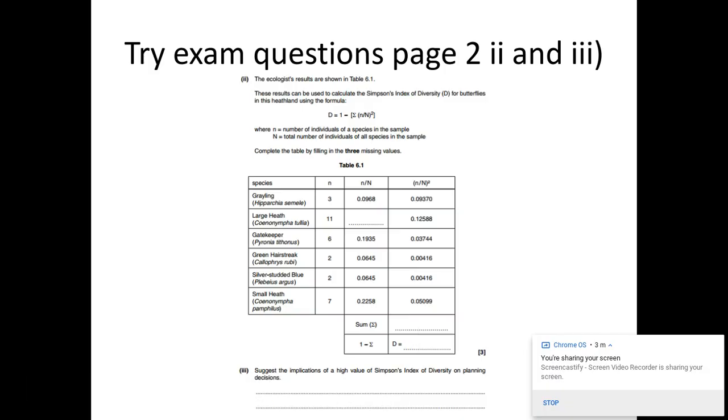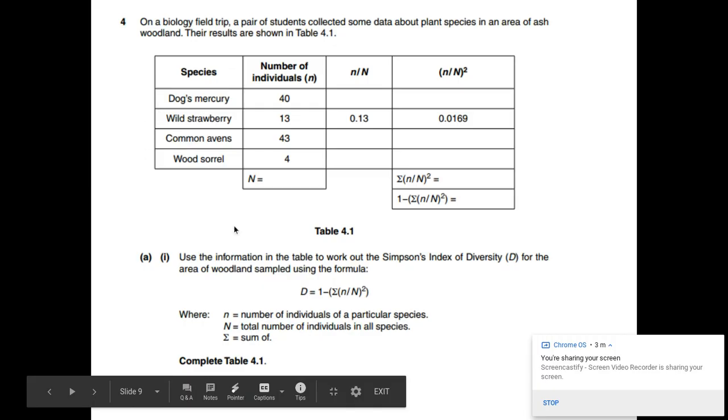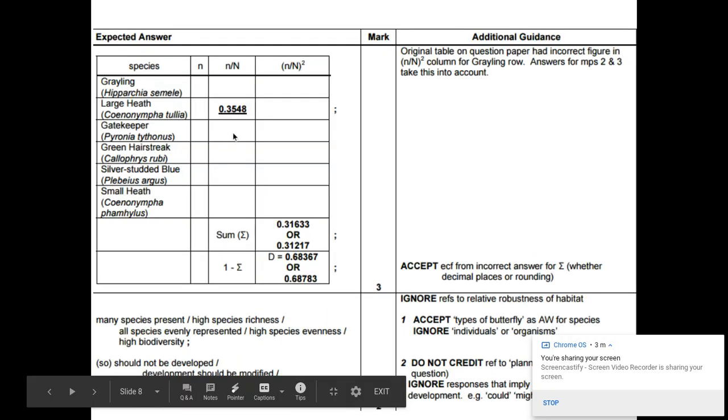So if you want to have a go at that, pause it and have a go. The mark scheme is on the next page. So have a go first. And then this is what we should have got. Sorry, this is what we should have got there. So that's the number for large heath. Then we take away this number from 1 to get this.